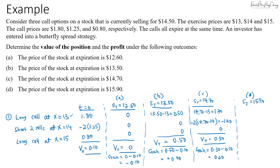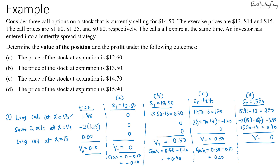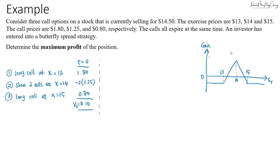In scenario D, the spot price is $15.90. The long call at $13 pays $15.90 − $13 = $2.90. The two short calls at $14 pay −2 × ($15.90 − $14) = −$3.80. The long call at $15 pays $15.90 − $15 = $0.90. The total value at expiration is $2.90 − $3.80 + $0.90 = $0. The gain is $0 − $0.10 = −$0.10, a loss of $0.10.